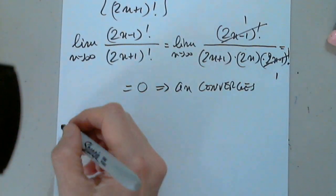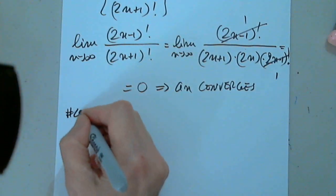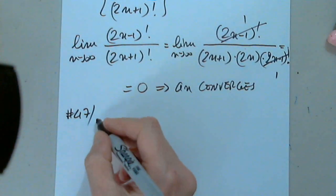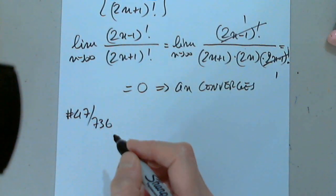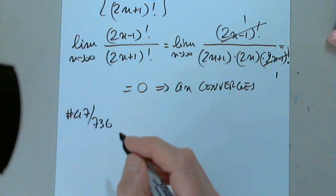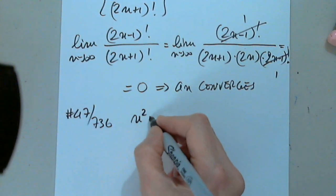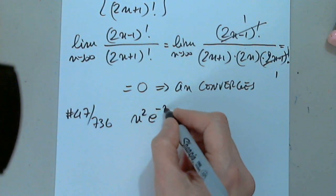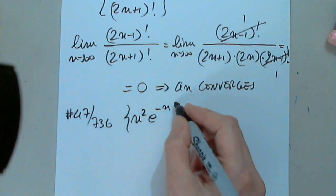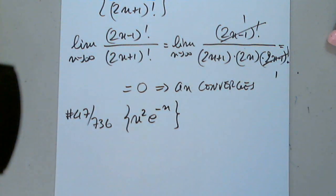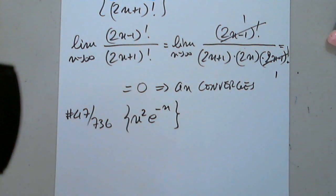Let's also look at number 47 on page 736: a sub n equals n squared times e to the negative n. Let's see how we're doing on time — let's stop here and I will continue in the next video.